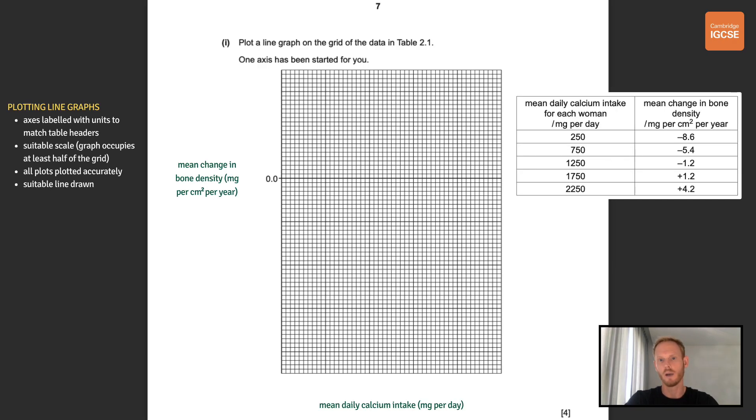Okay so we'll start as always by labelling the axes with units to match the table headers. So mean daily calcium intake, our independent variable, goes on the x-axis and mean change in bone density, the dependent variable, the thing we're measuring, goes on the y-axis. Next you'll need to make sure that you use a suitable scale and that your graph occupies at least half of the grid in both directions. Then accurately plot your points. The margin of error specified in the mark scheme is plus or minus half a small square. And finally draw a suitable line connecting the points.